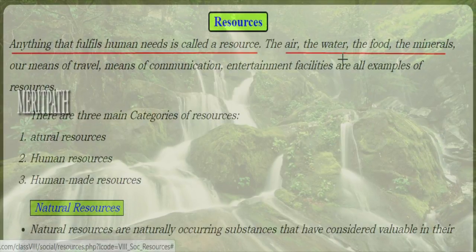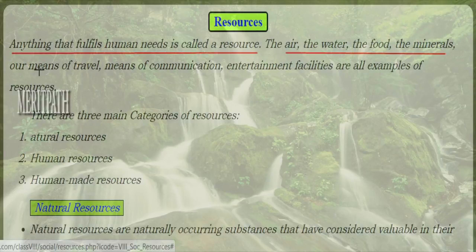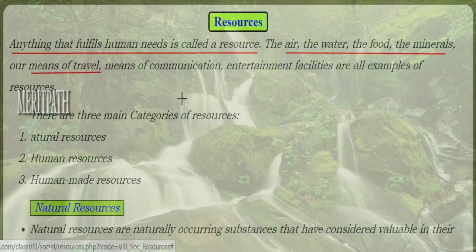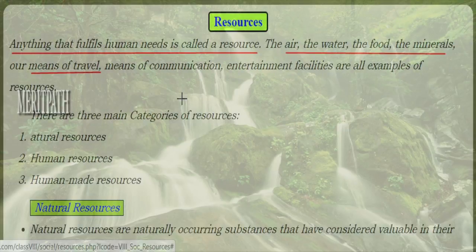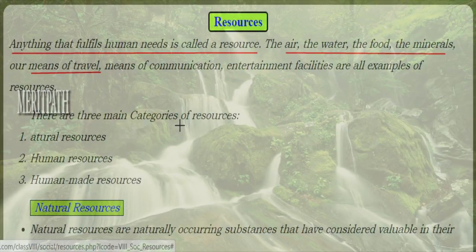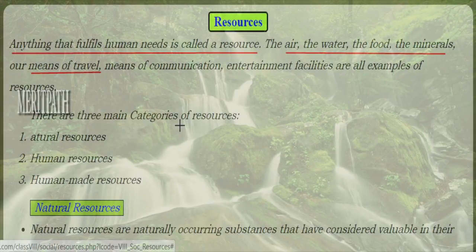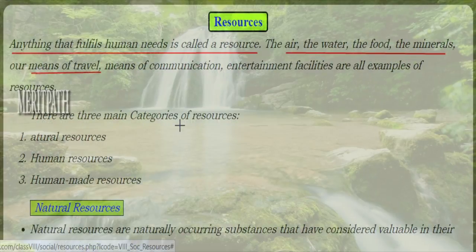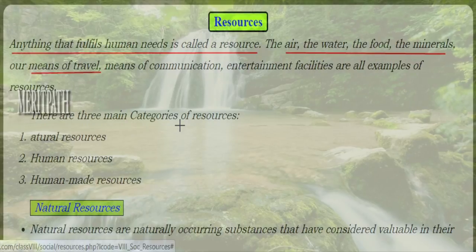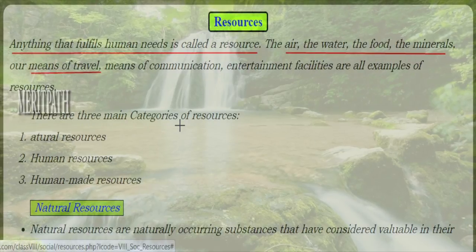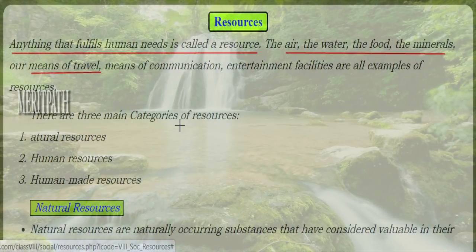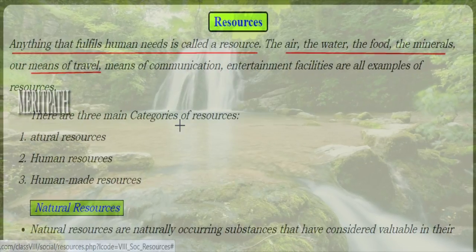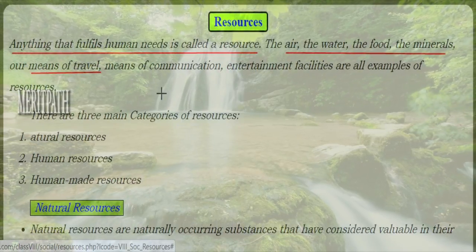The air we breathe, the water we drink, the food we eat, the transportation we use to get home from school — these are all resources. Air, water, and food all have something in common: utility. How we use resources and make use of them properly, and where we get them from, all comes under this chapter.